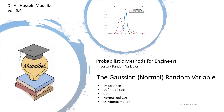This is Alimo Gable and you're watching Probabilistic Methods for Engineers. Today we discuss the very important topic of the Gaussian or normal random variable. We'll see why it is so important, look at the definition, examine the cumulative distribution function and the normalized one, and conclude with the Q approximation for the CDF.